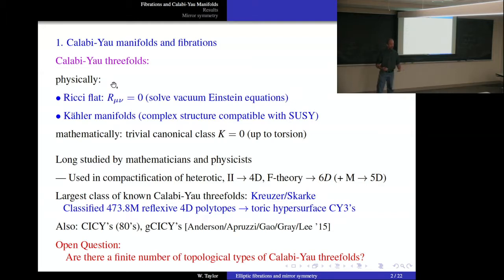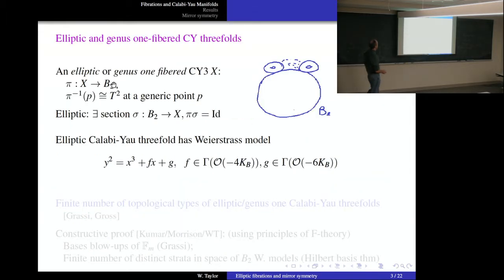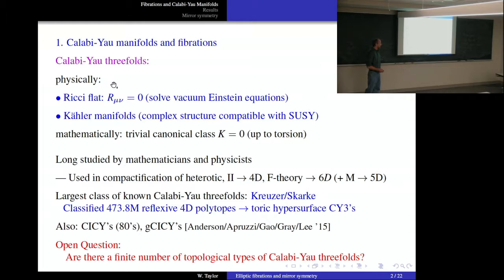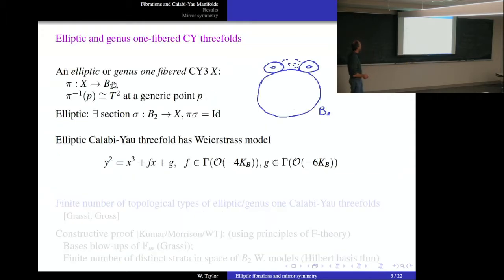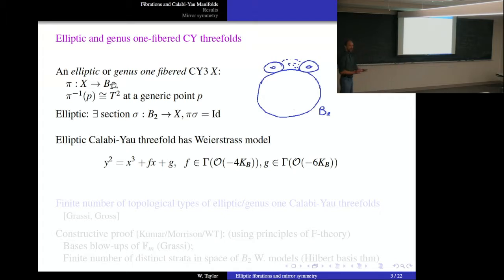There remains an open question: are there a finite or infinite number of topologically distinct types of Calabi-Yau threefolds? Hopefully what I say today will begin to shed some light on the answer. Someone noted asking this question 35 years ago. I think it may be less than 35 years before the answer comes — we may be moving towards it.